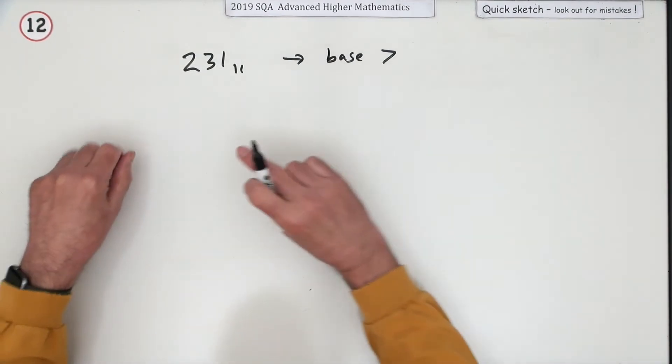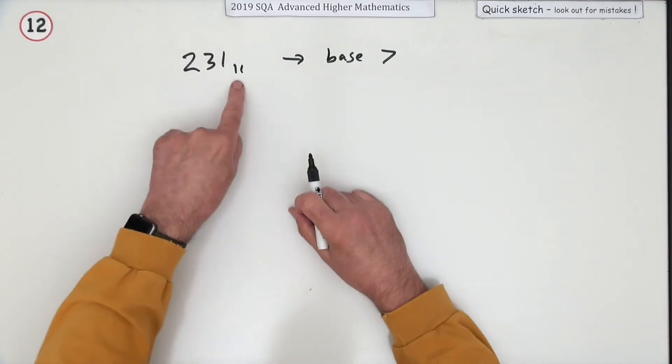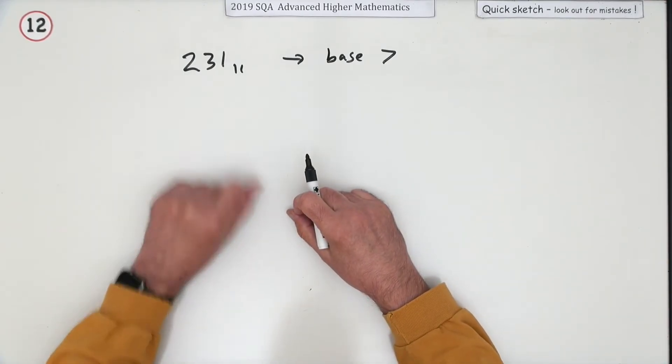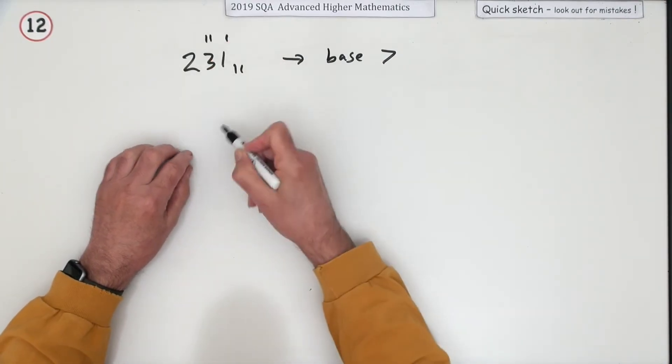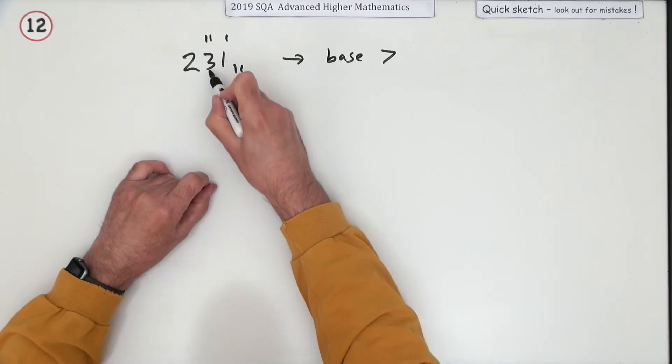Here's a number in base 11. Base 11 means you're counting in 11s. Those are the units, every 11 gets put into this pile so those are 11s, and those are 11 squareds.